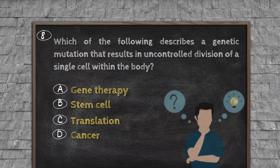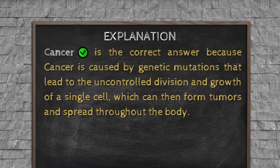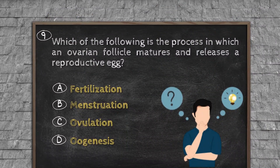Question number eight. Which of the following describes a genetic mutation that results in uncontrolled division of a single cell within the body? Option A, gene therapy. Option B, stem cell. Option C, translation. Option D, cancer. Explanation: Cancer is the correct answer because cancer is caused by genetic mutations that lead to the uncontrolled division and growth of a single cell, which can then form tumors and spread throughout the body.